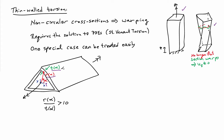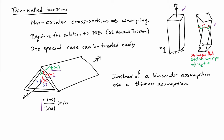When I say that the cross-section is thin-walled, what I mean is that the ratio of R to t is always going to be greater than 10. This actually allows us to construct a theory that works for non-circular cross-sections — a special case: thin-walled. The way it's done is that instead of using a kinematic assumption, we're going to use a thinness assumption, and that's why we're talking about thin-walled here in the setup.